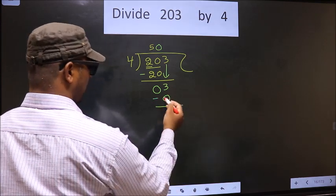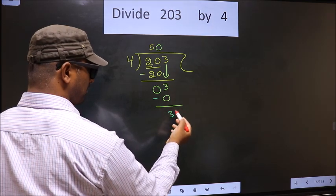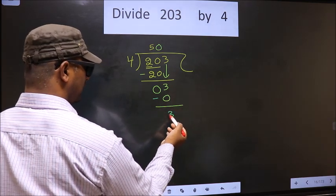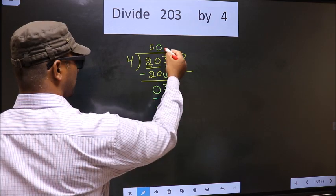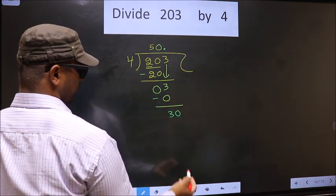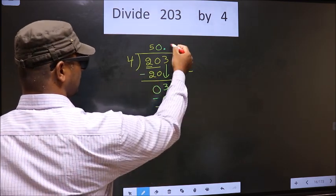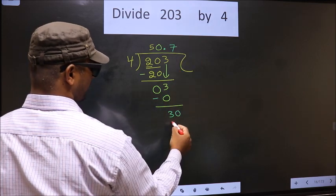Now, you subtract. 3 minus 0, 3. Now, here we did not bring any number down. And 3 is smaller than 4. Now, you can put a dot and take 0 here. Now, here we have 30. A number close to 30 in 4 table is 4 times 7, 28.